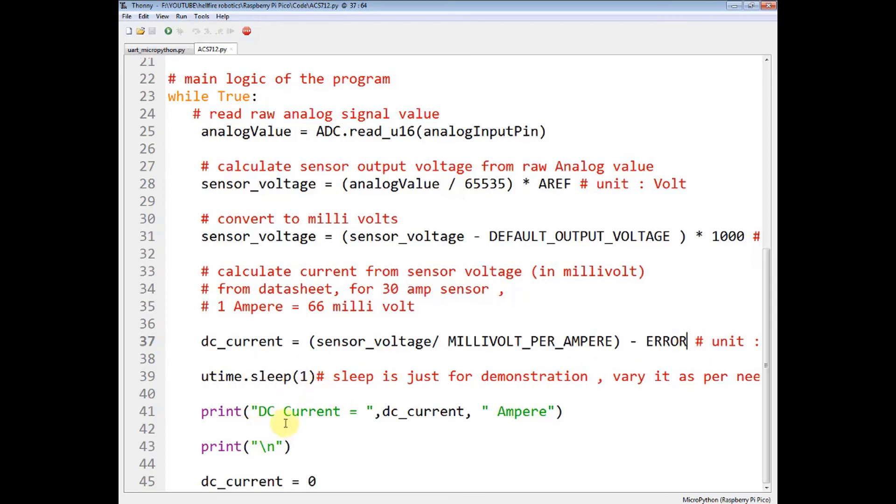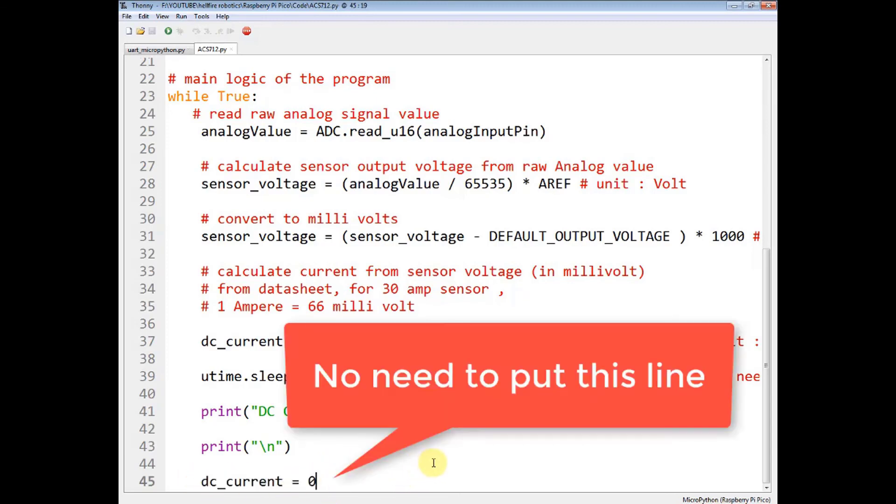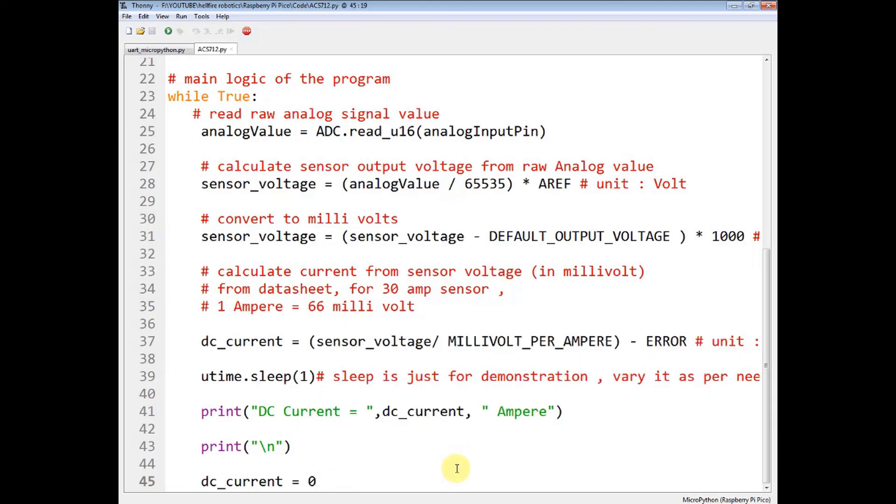Now give some time delay and print DC current is equal to this variable's value and then add the unit. And in the last set the DC current to zero. So this is the end of the MicroPython script and I will upload the code in the description. And thank you very much for watching the video.